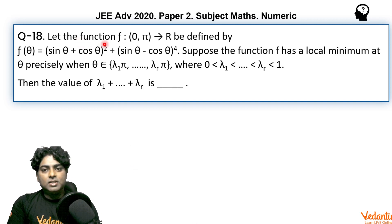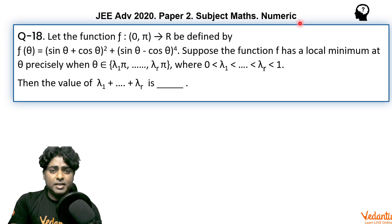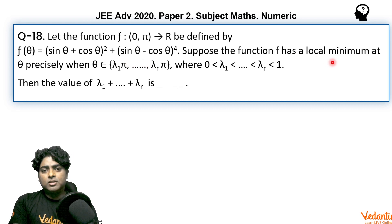It came in the numeric based category. The question says: Let the function f from (0, π) to R be defined by f(θ) = (sin θ + cos θ)² + (sin θ - cos θ)⁴.